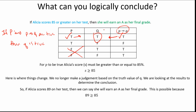So let's look at this next line in our explanation — here's where things change. We no longer make a judgment based on the truth value of Q; we're looking at the results that determine the conclusion. So since we know she scored an 89 and our if was true, now that our P implies Q is true, or that she did score higher than an 85, we can now say that she will in fact earn her A as her final grade, which is what we had in green.